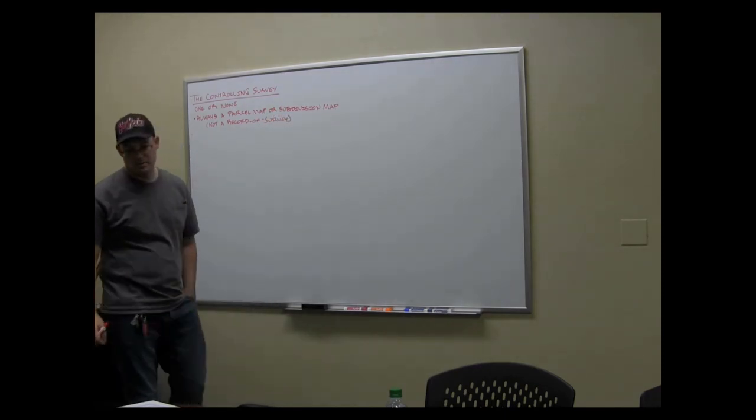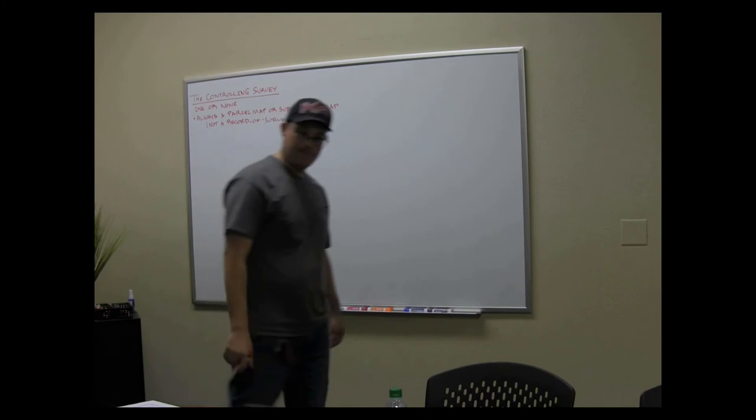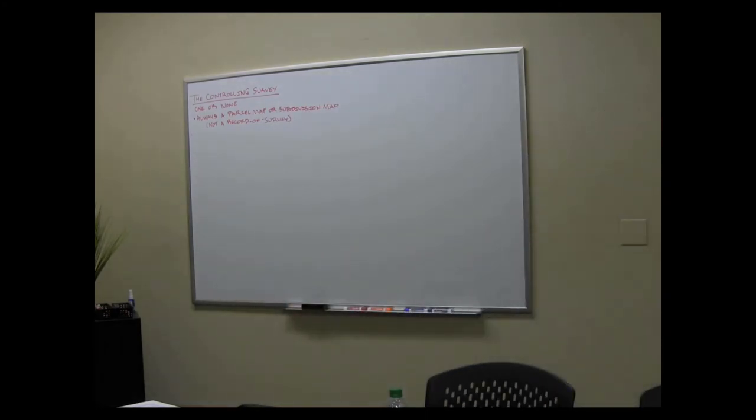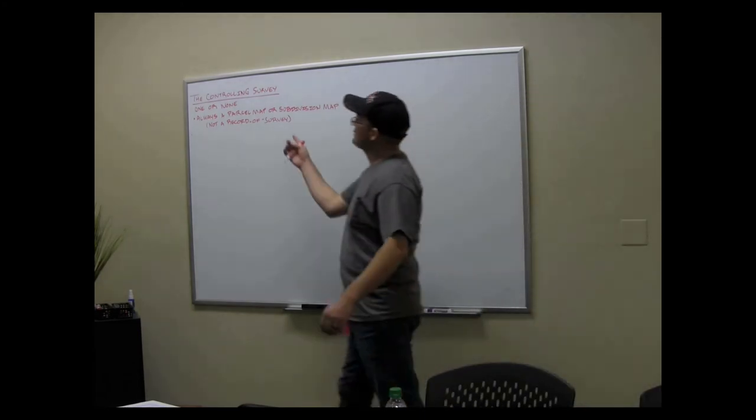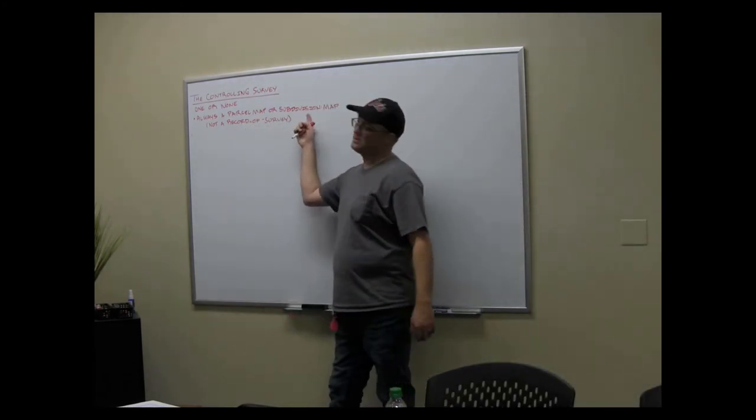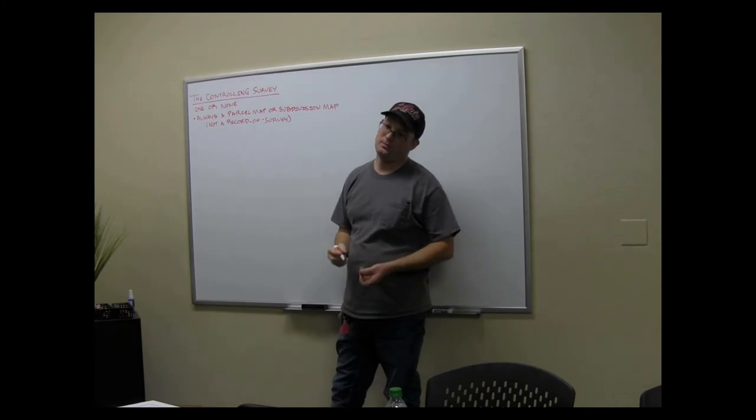Why would it be subdivision if subdivisions just create it from scratch? Not a record of survey. Records of survey do not create parcels. Okay, say your question again, Jim. Okay. For a subdivision map, that's like the map they put together when they are about to build, or when they have built a subdivision? No. A subdivision map subdivides one parcel into many parcels. They both do this. So, in California, a parcel map is four lots or less. A subdivision map is five lots or more.